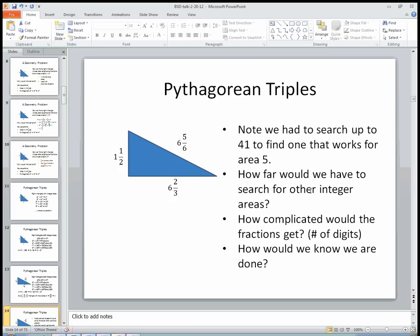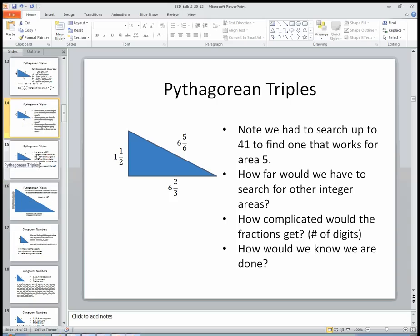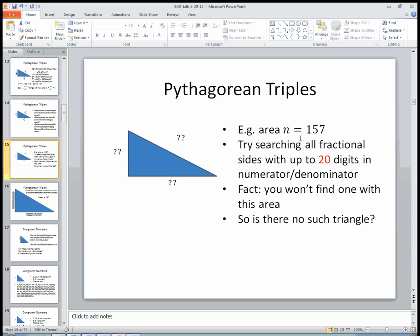What if we had some other integer area we wanted? 3, for example, because we haven't found one for 3 yet, or 4, or 7, or 11, or 24, or 156. How far would we have to search? It's not at all clear. How complicated would the fractions have to get? For example, let's count the number of digits. And suppose we pick a particular number that we want for the area of our triangle, and we start searching. Suppose we just haven't found one after searching for a while. How would we know that we're done? That we cannot find something?